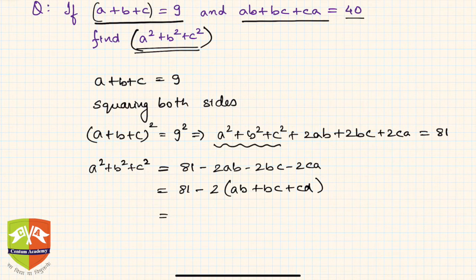Why? Because I know that this value has been given and this value is nothing but 40 over here. So hence it is 81 minus 2 times 40. Hence the value of a square plus b square plus c square will be simply 1. So this is the answer.